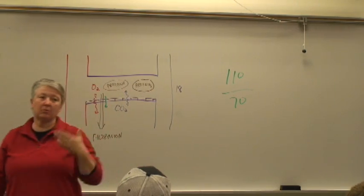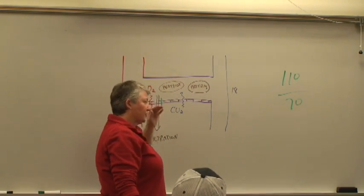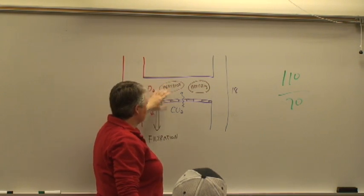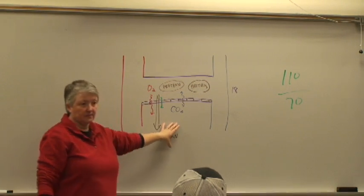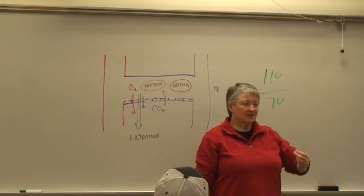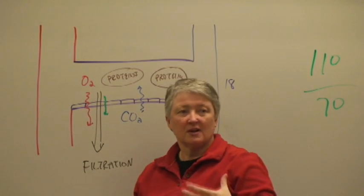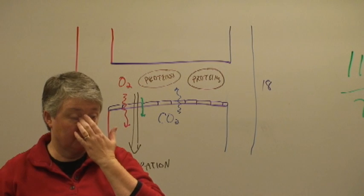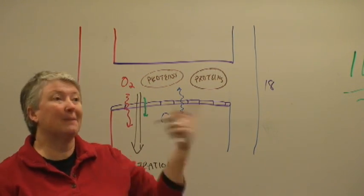One of the reasons we worry about blood pressure is that if it begins to drop, you're going to have issues getting blood to flow, and you're not getting filtration of stuff out of the bloodstream into the other tissues. This is particularly critical in the kidneys. When you go into shock and your blood pressure drops, one of the first things that shuts down is the kidneys — there's not enough pressure to filter the blood and get waste materials out of the bloodstream. We'll come back to that when we get to the kidney.